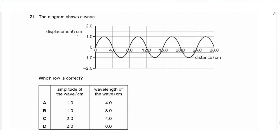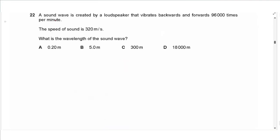Question 21: the diagram shows a displacement-distance graph of a wave. The amplitude is the displacement from the undisturbed position to a crest or trough, which is 1. The wavelength is the distance between two identical corresponding points, which is 8. The answer is B.